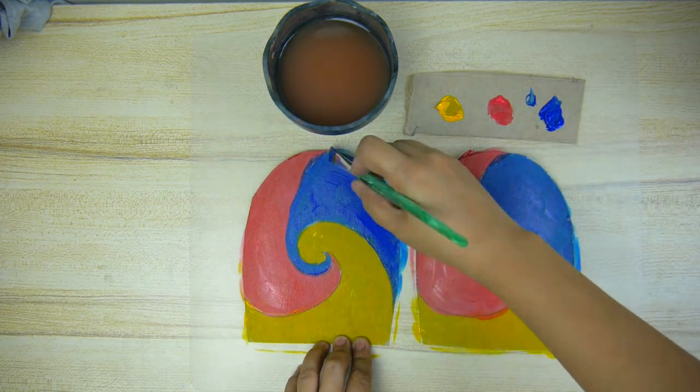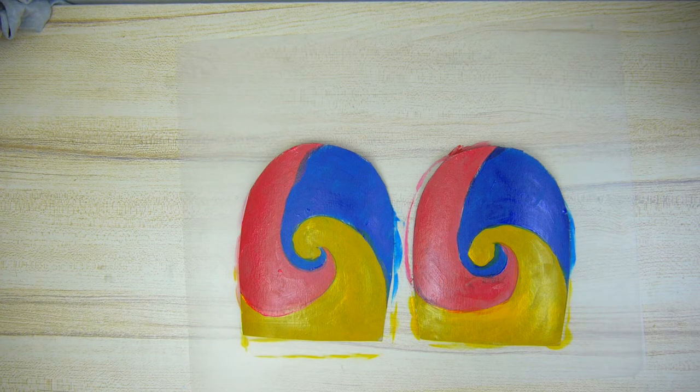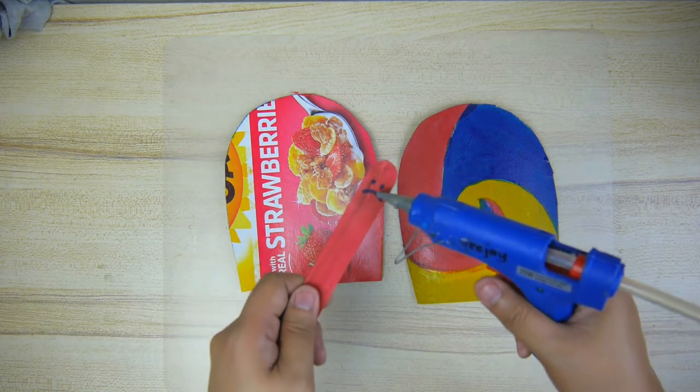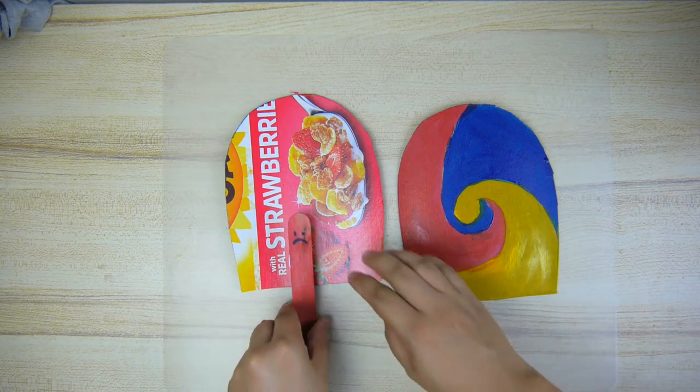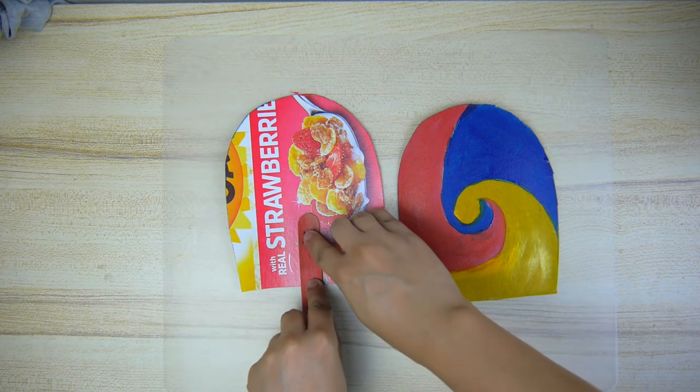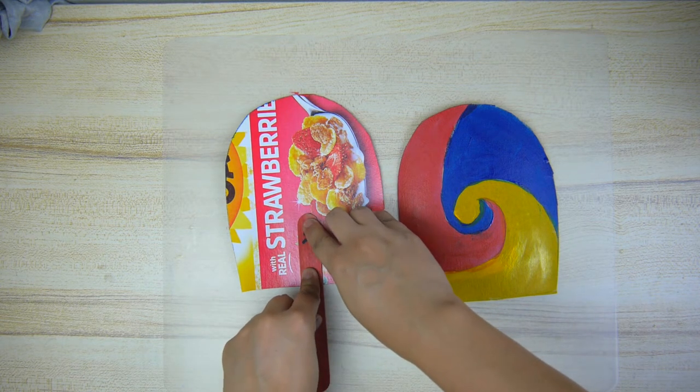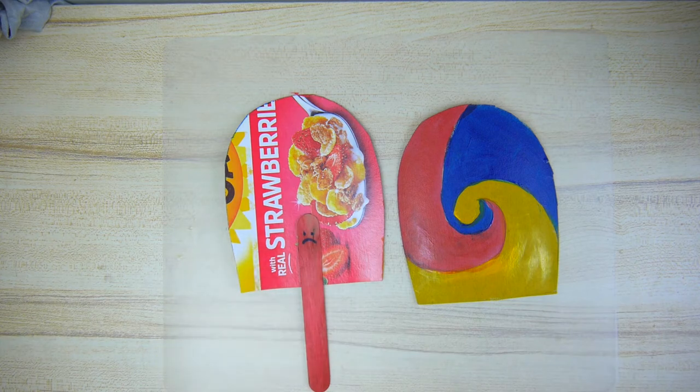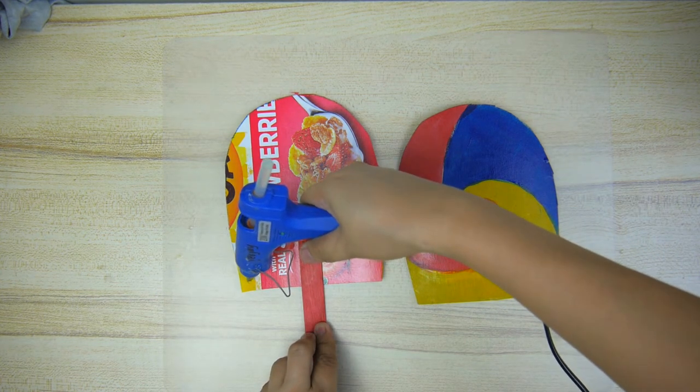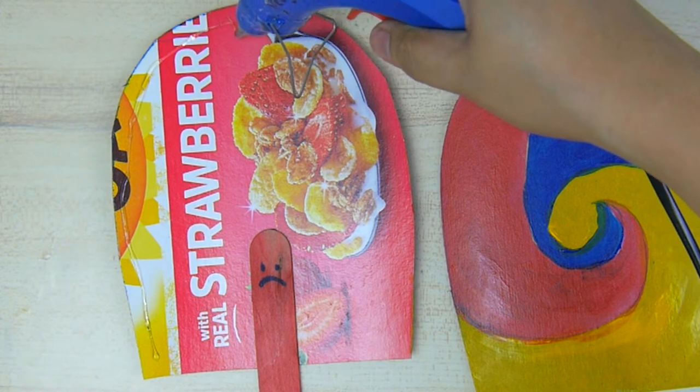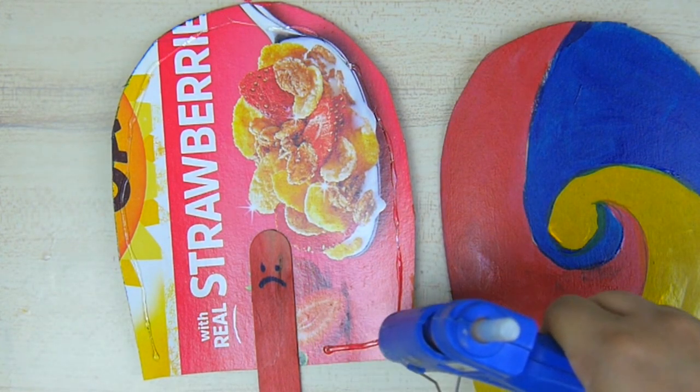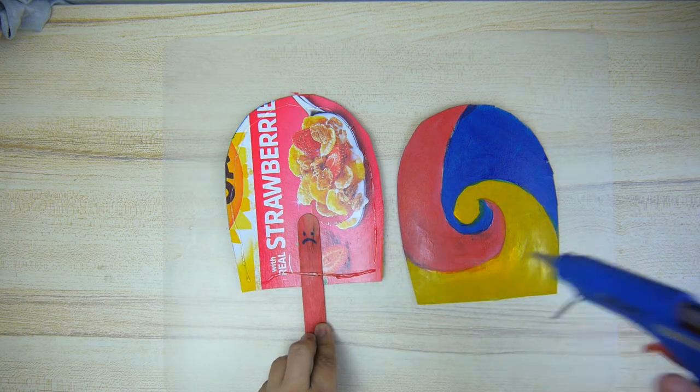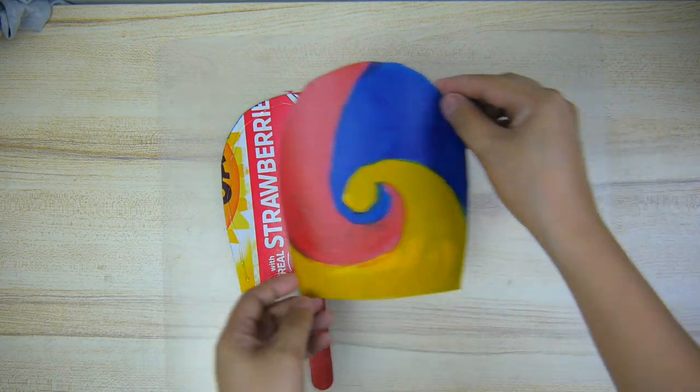Once it's dry, take out your popsicle stick or barbecue stick or chopsticks and glue it on the back of the fan. Now cover it up.